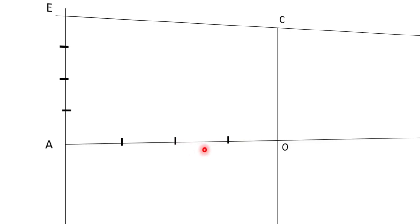Once we get the points on these edges, we will name those points as 1, 2, 3 on AO and 1', 2', 3' on AE. As I mentioned before, whatever points you have plotted, you are going to use them. So here, having plotted the points 1, 2, 3 as well as 1', 2', 3', we are going to use them.